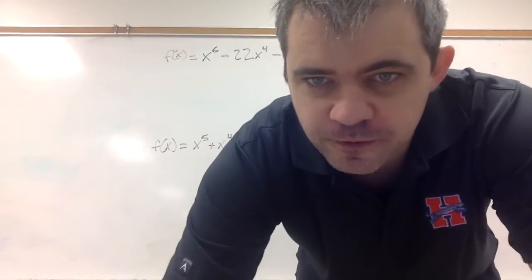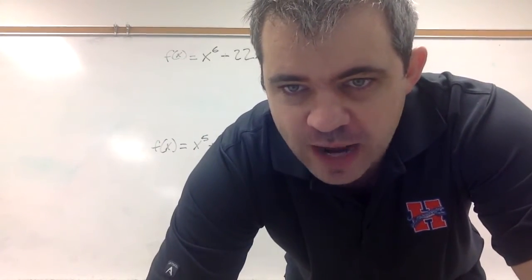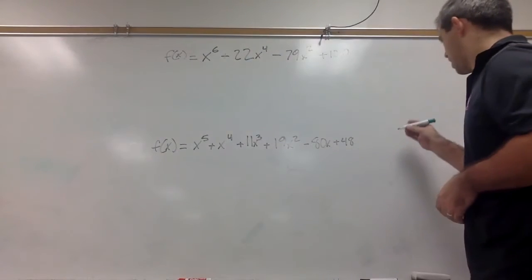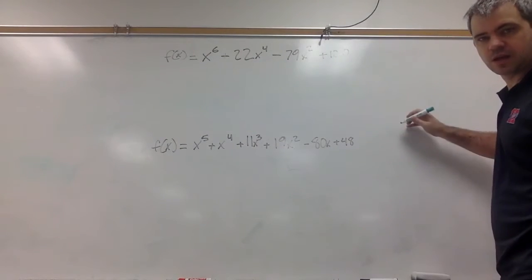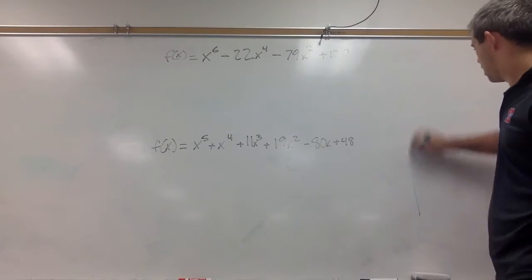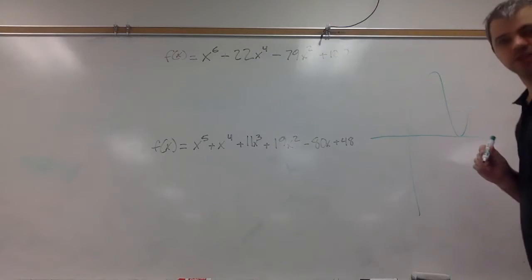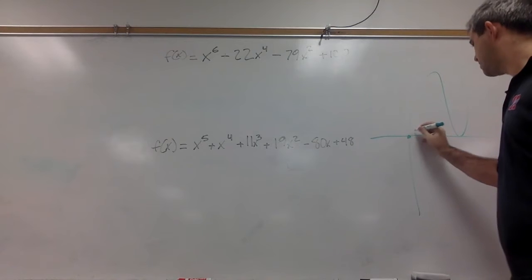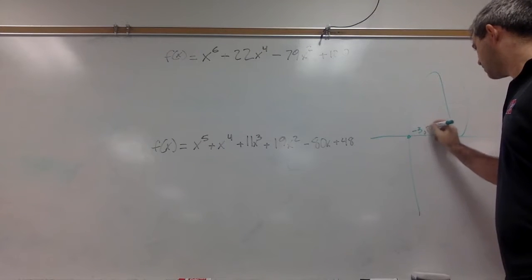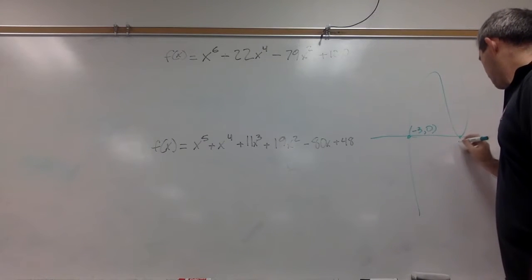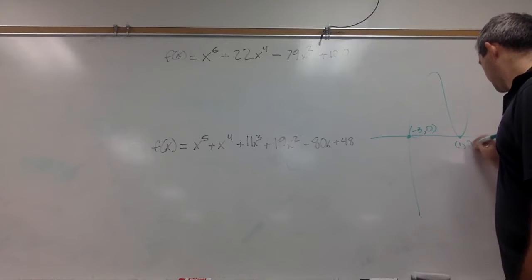Okay, so this first one, when I graph it, it goes like this. It's a little more dramatic than this, but this root winds up being negative three, zero, and this one winds up being one, zero.